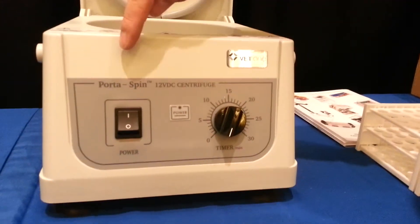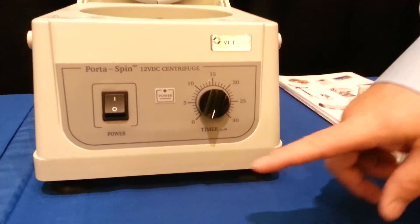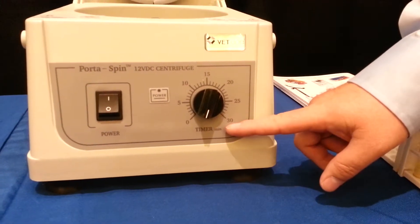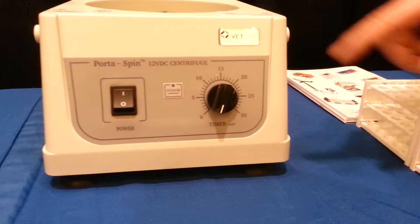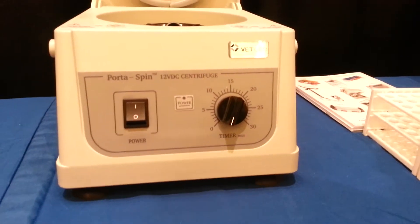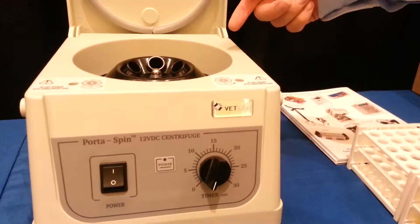You can see it's the Portospin. It has an on-off switch and an analog timer. It's a very simple unit to operate. It's part of the VET1 program. It's got a six-place rotor.